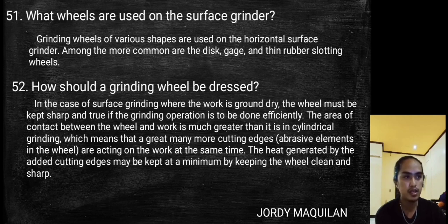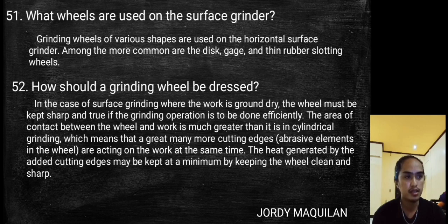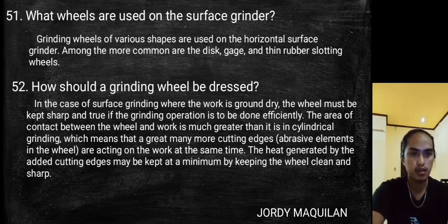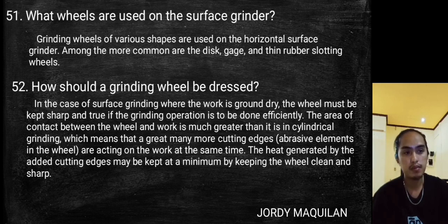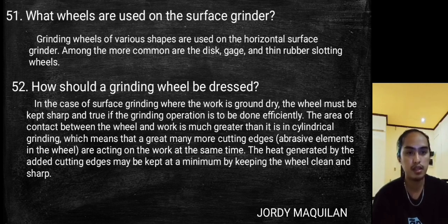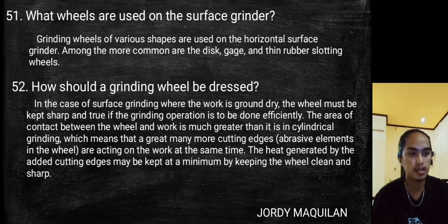What wheels are used on the surface grinder? Grinding wheels of various shapes are used on the horizontal surface grinder, including gauge and thin rubber slotting wheels. The wheel must be kept sharp and true. The area of contact between the wheel and work is much greater than in cylindrical grinding, meaning many more cutting edge abrasive elements are cutting simultaneously. The heat generated may be kept to a minimum by keeping the wheel clean and sharp.